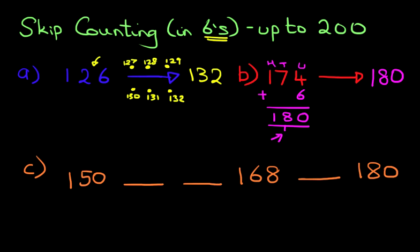There is our number sequence. We start at number 150. There is our first blank, second blank, and the third blank. We've also got numbers 168 and 180. We've been told in the question that we're going to be counting in sixes.